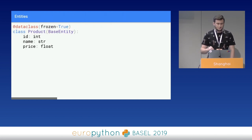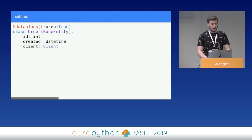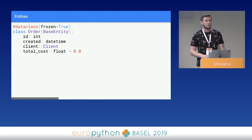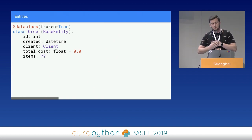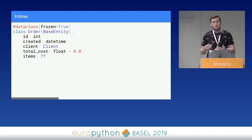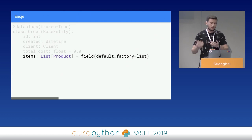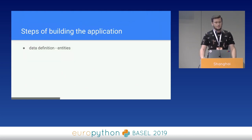We can add a product definition — also a frozen data class — and the most complex one: Order, with fields ID, created, client. As you can see, we can use our other data classes as types. Then total cost, where you can see how to define a default value, and items. Without a type on items, we'd usually need to dig through the code to find out if it's a list, a dictionary, or some other class instance. But with well-defined types like this one, we know for sure it is a list of product class instances. To set an empty list as a default value, we need to use field with default_factory.